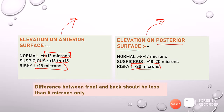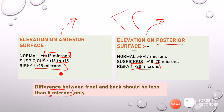One more important point: we find the difference between the front and back elevation, which should usually be less than 5 microns. There should not be much difference between the anterior and posterior elevation maps. Remember: anterior elevation map more than 15 is risky, and posterior elevation map more than 20 is risky.